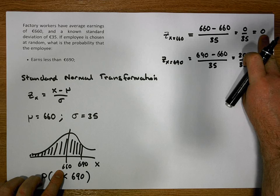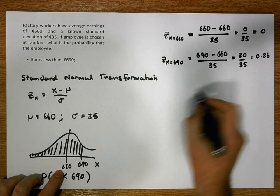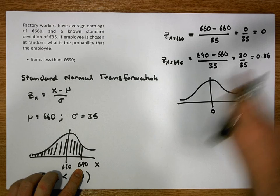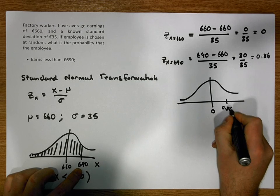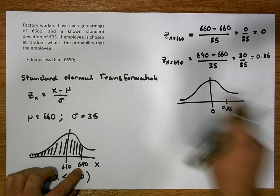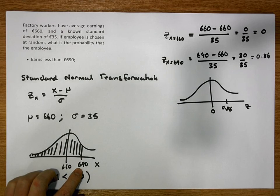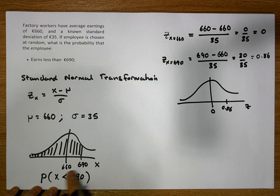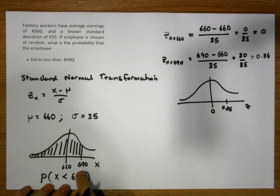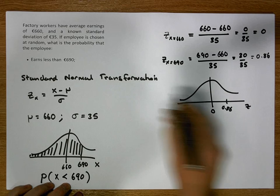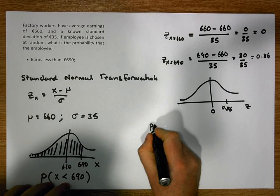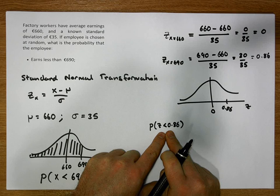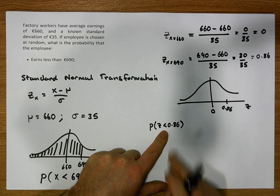When we apply the standard normal transformation, our distribution centered on 660 is transformed to a distribution centered on 0. So 660 maps to 0, and 690 maps to 0.86 on the right-hand side. This z-axis now represents the standard normal variable. The probability we need — the area to the left of 690 — becomes the probability of observing a z-score less than 0.86, which are what we call type 1 probabilities.